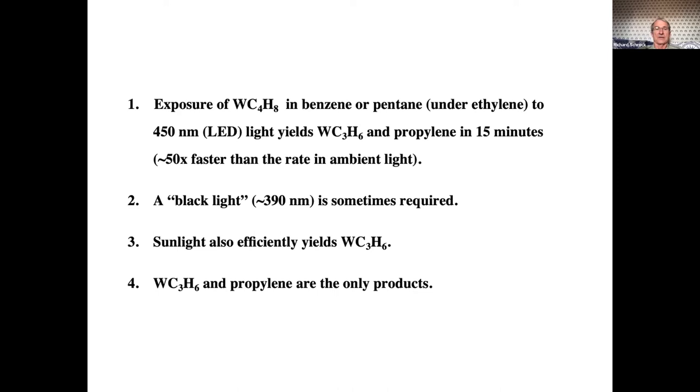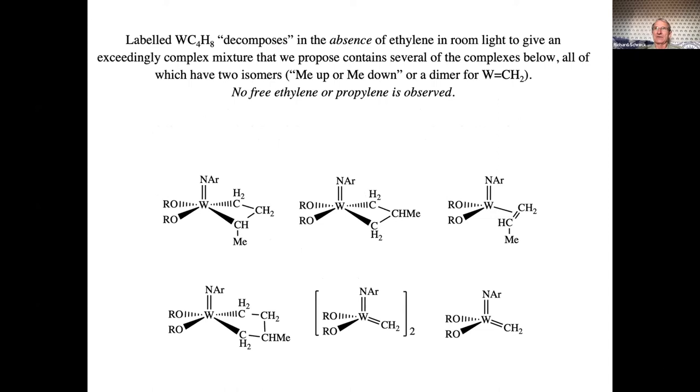Now we're starting to do variations, and I'll tell you more about the reaction in a minute. But sometimes a black light, lower, higher energy, lower wavelength is required. And you can get those too, and the one we get uses 390 nanometer light. That's sometimes required. Sunlight, of course, has frequencies in the spectrum that can do this reaction. Also, that also works, and the metallicyclobutane and propylene are the only products.